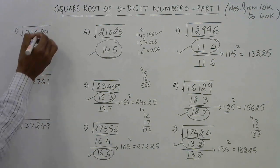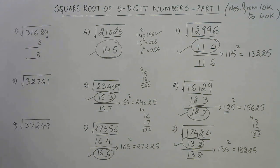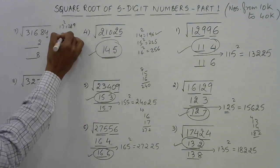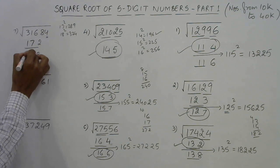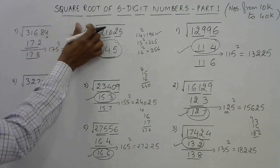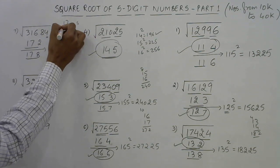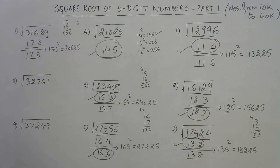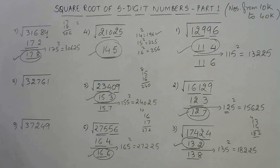Three more examples. This number ends with 4, so the answer will end with 2 or 8. 17 squared is 289 and 18 squared is 324, which is greater than the triplet, so we take 17 — the remaining part is 17. Our answer is either 172 or 178. Take the intermediate number 175 squared. Multiply 17 by its successor 18: 17 times 18 is 306, followed by 25, giving 30625. The original number is greater than 30625, so our answer is the greater one — 178.